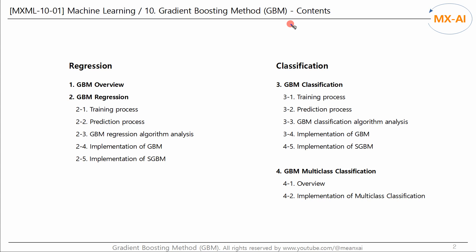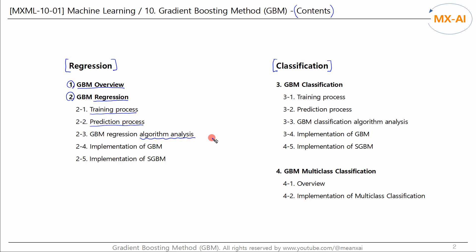Let's take a look at the full table of contents of the GBM series. The GBM part consists of regression and classification. Chapter 1 provides an overview of the GBM. Chapter 2 examines the regression algorithm — we explore the training and prediction process, analyze the regression algorithm in detail, and implement the GBM and SGBM regression algorithms in code.